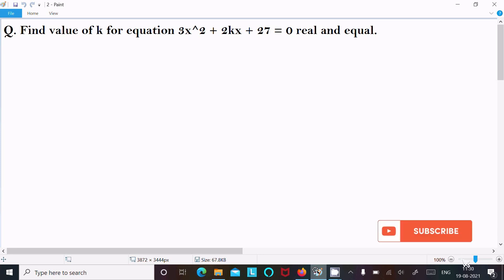Hello friends, in this video lecture I am going to find the value of k for equation 3x² + 2kx + 27 = 0. Let's see the answer. First, writing the given equation: 3x² + 2kx + 27 = 0.